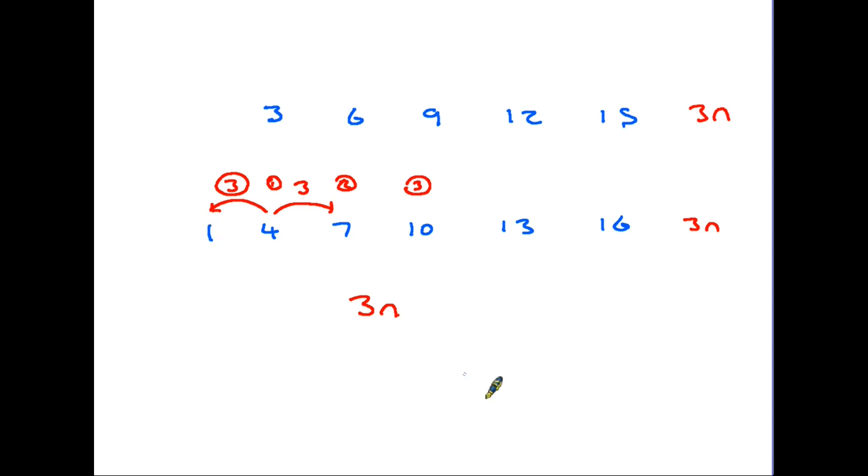In this case it is simply the number 1, the positive number 1. Therefore on the end of the 3n we write 3n plus 1 and that is the term, that is the formula for this particular sequence.